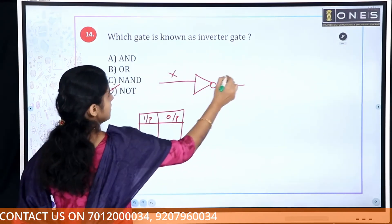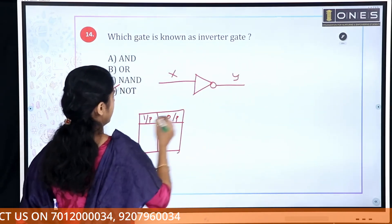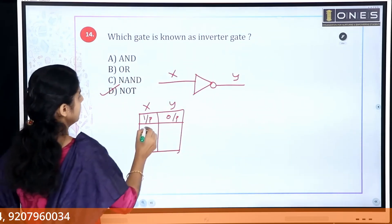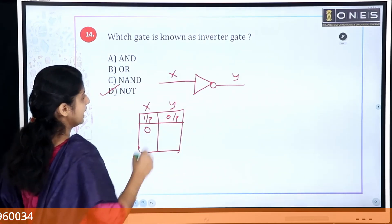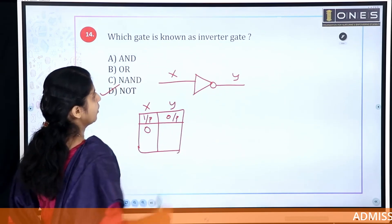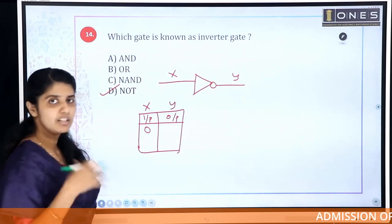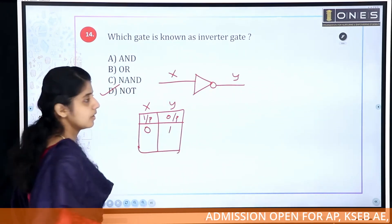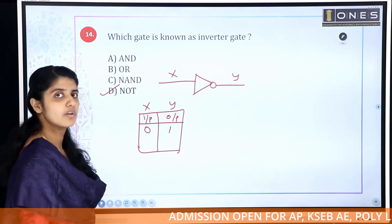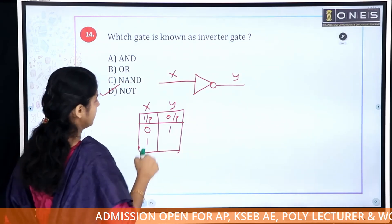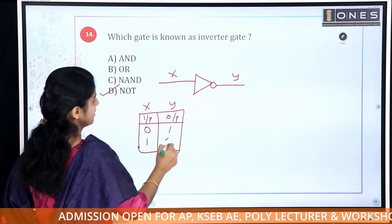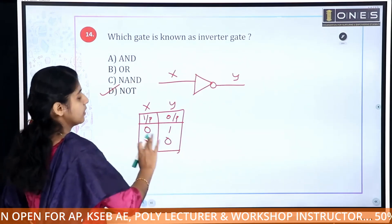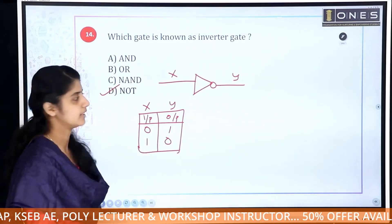For the NOT gate: input x, output y. When input is 0, output is 1. When input is 1, output is 0. The NOT gate inverts the input — it produces the complement of the input.